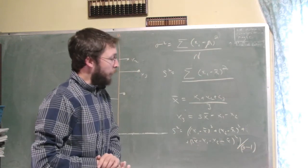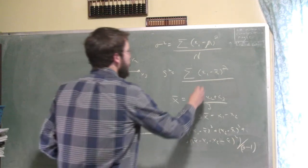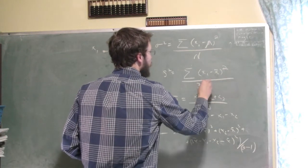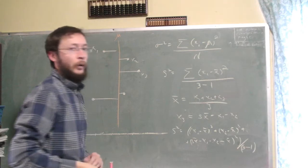Because we've got n minus 1 free random variables, right? So down here, the denominator shouldn't be 3. It should be 3 minus 1.